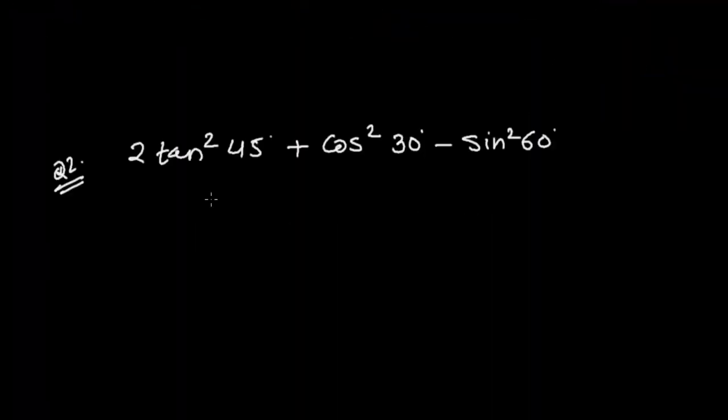Now there is another problem. It's almost the same. Let me do this again. That will make you more clear in this chapter. So it's 2 times tan square 45 plus cos square 30 subtraction sin square 60.